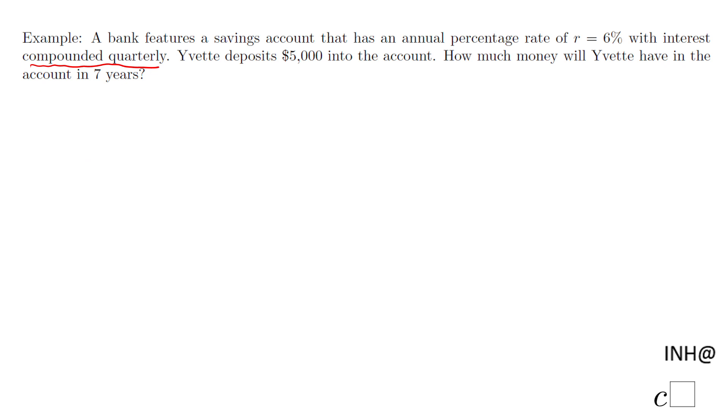The question is how much money she's going to have in seven years. For that reason, we're going to use this formula you see here: A equals P, which stands for the principal, the money you deposit, times one plus r over n. R is the rate.